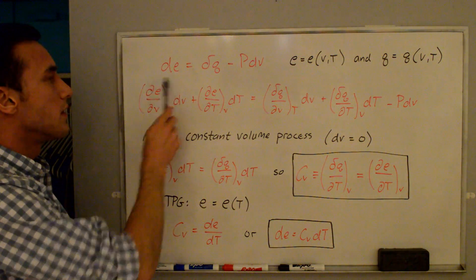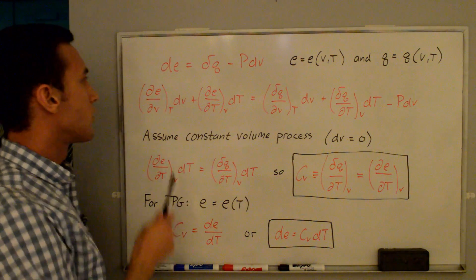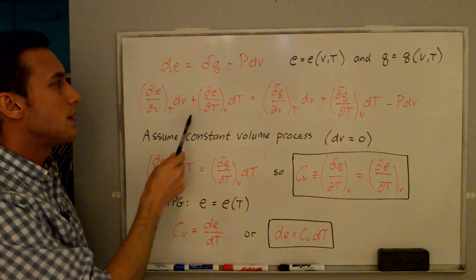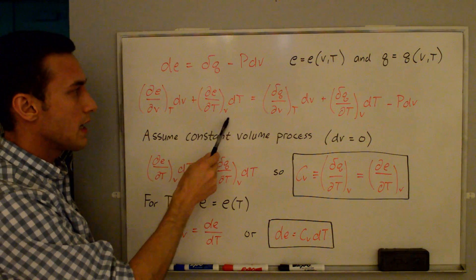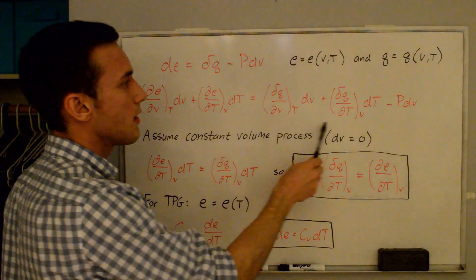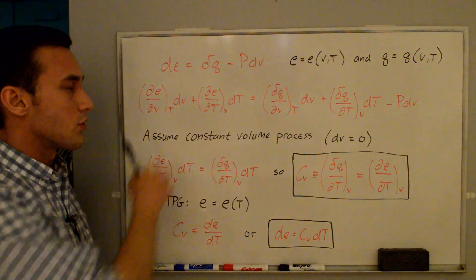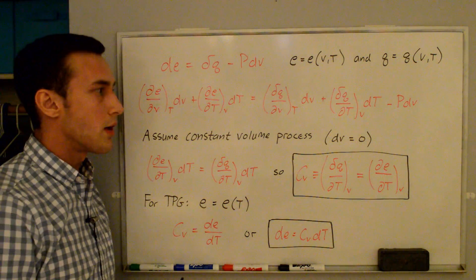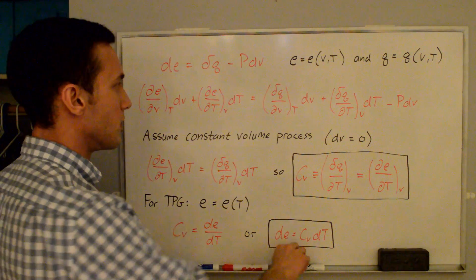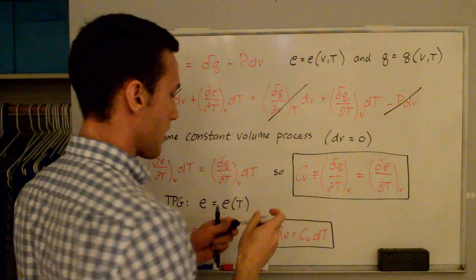If we take the derivative and expand it out, we have to take partial derivatives: dE/dV holding T constant times dV, and dE/dT holding V constant times dT. We also expand out the dq in the same way, and then we have minus p dV. For the constant volume process, dV equals zero, so these terms cancel out.